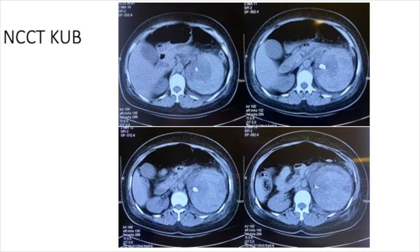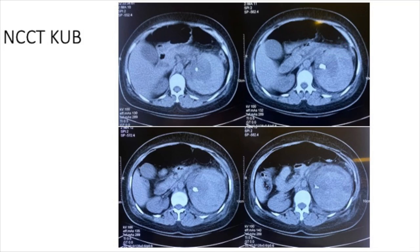She was subsequently evaluated with an NCCT-KUB, and in the images provided, you can clearly see that compared to the right kidney, the left kidney is being compressed all around by a hyperdense collection surrounding the entire left kidney. You can also notice a radiodense calculus in the left kidney. This hyperdense collection seen all around the kidney is likely a spontaneously occurring hematoma.